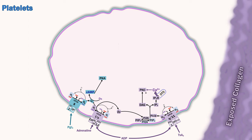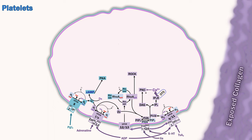ADP stimulates Gq11 via the P2Y1 receptor as well as Gi via the P2Y12 receptor. The Gi pathway inhibits cAMP and also stimulates PI3K with the beta-gamma subunits. There is also the G12/13 pathway associated with the small non-trimeric GTPase protein Rho, which toggles between inactive and active and activates its own effector kinase known as ROCK. Receptors activating the G12/13 pathway as well as the Gq11 pathway include the serotonin 2A receptor and PAR1 and PAR4.